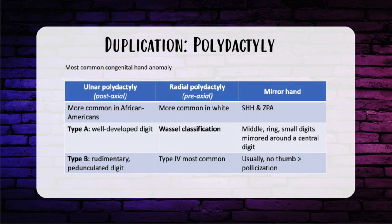Mirror hand is a complete duplication of the ulnar aspect of the forearm and hand. Think mirror hand, sonic hedgehog gene, and the zone of polarizing activity or ZPA. You typically see a central digit with three digits on each side mirroring the middle, ring, and small fingers, no thumb, duplicated ulna, and absence of the radius. Treatment involves resecting the extra digits and pollicization if there's no thumb.